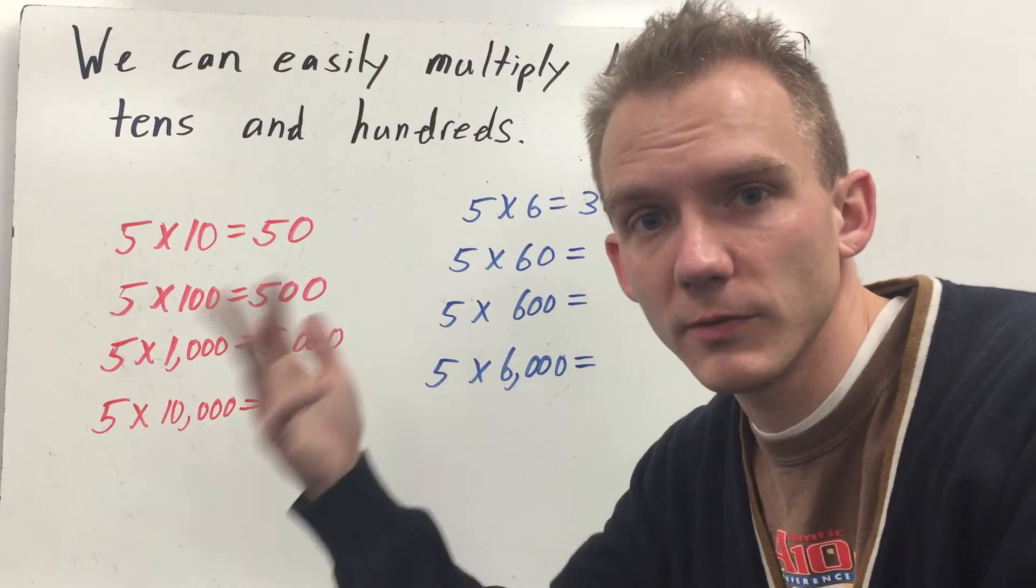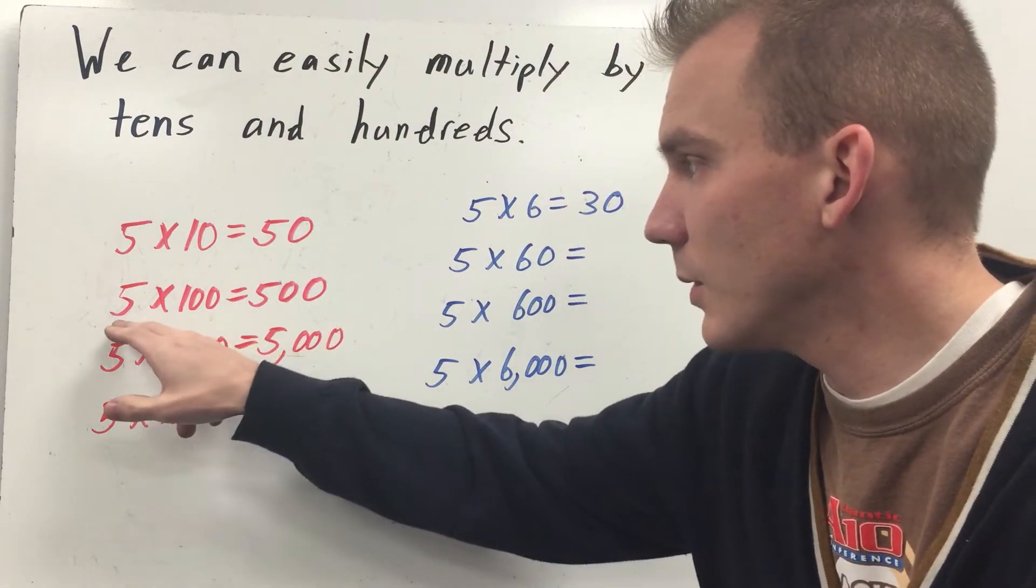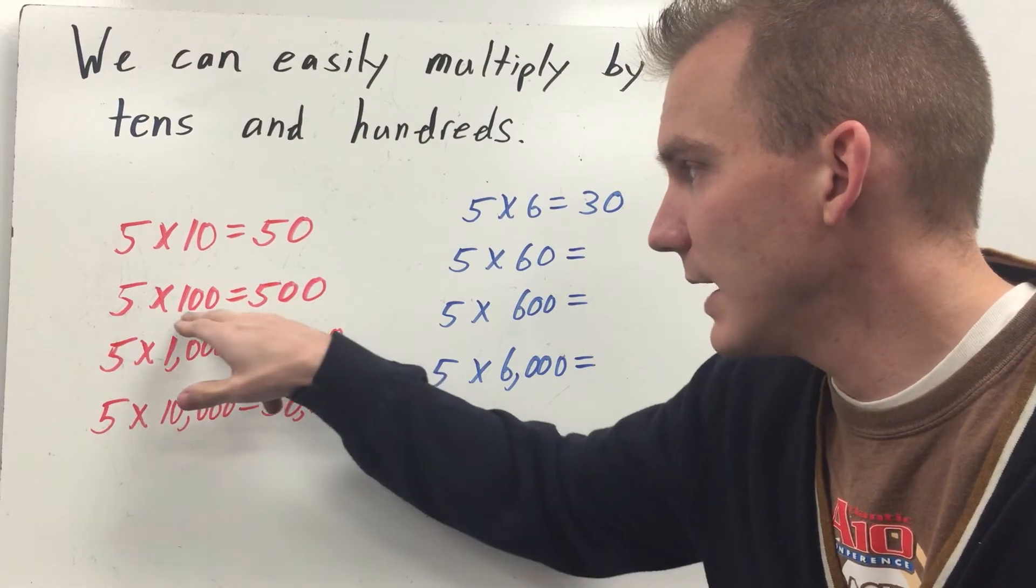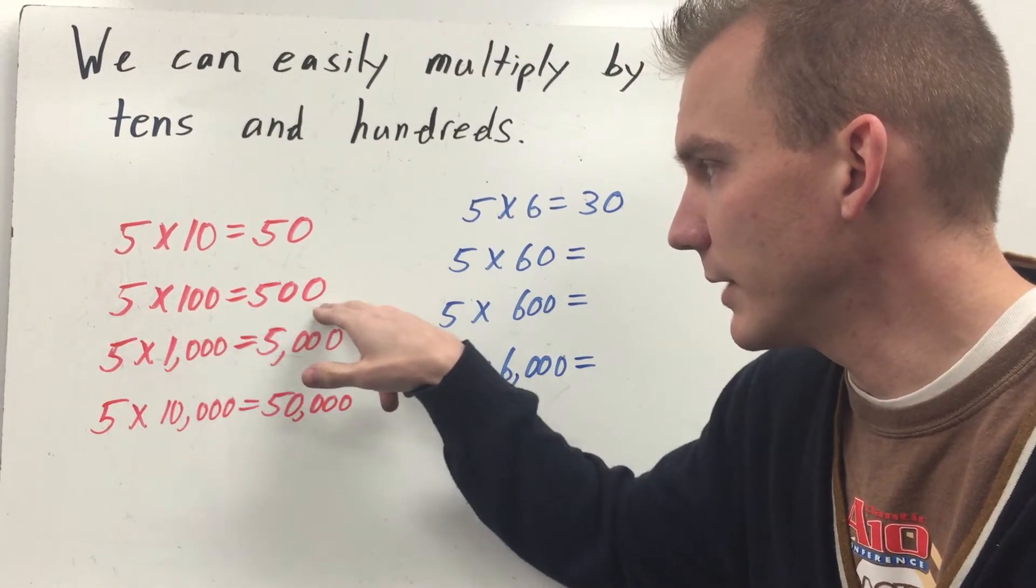That's simple if I just count by hundreds: one hundred, two hundred, three hundred, four hundred, five hundred. But there's also a pattern. Five times one is five. And you take the two zeros, you put them in your answer.